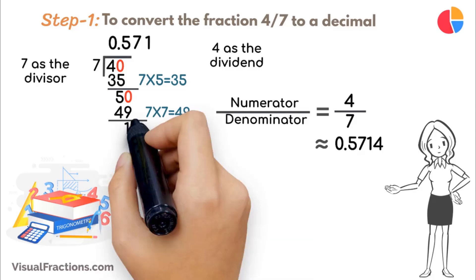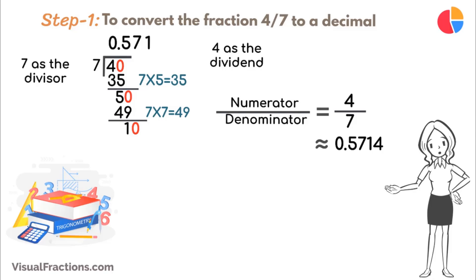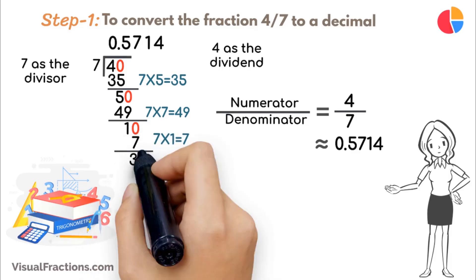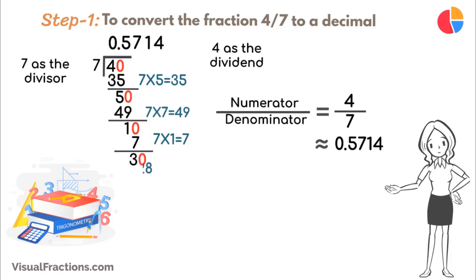Continue this process by bringing down another 0 to make it 10. 7 goes into 10 once, updating the quotient to 0.5714. Multiply 7 by 1 to get 7, and subtract this from 10, leaving a remainder of 3.